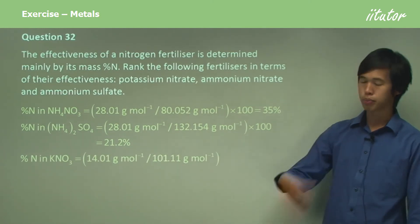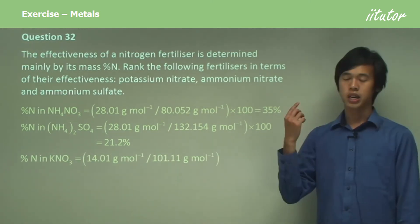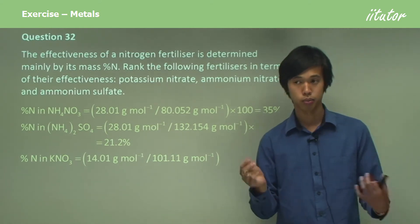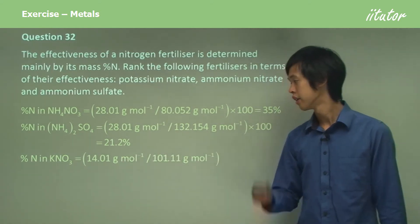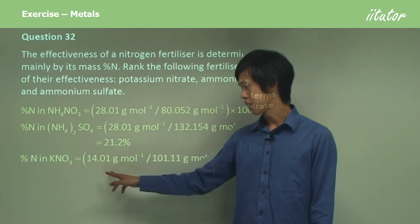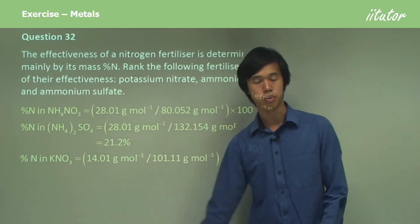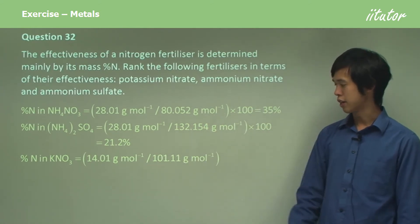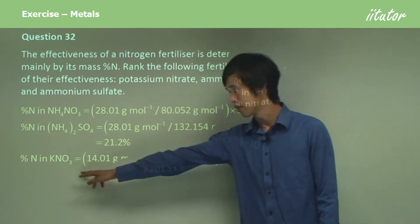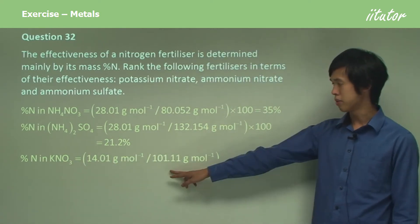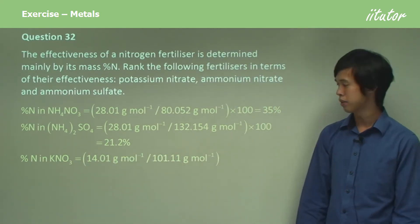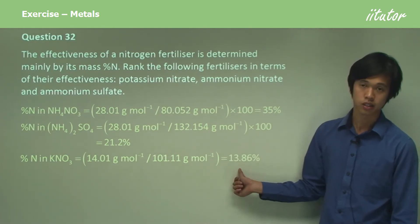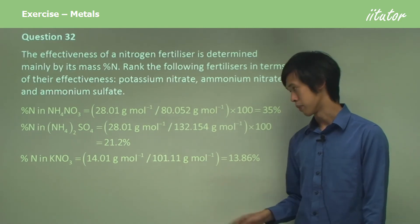For KNO3: potassium ion has a valency of one, nitrate ion has a valency of negative one — put them together and that works out perfectly. But in this case it only has one nitrogen per molecule, so it's 14 grams per mole divided by 101.11, which is the molar mass of potassium nitrate. 14 is quite a small number relative to 101.11, so the percentage is only 13.86%.